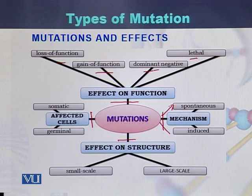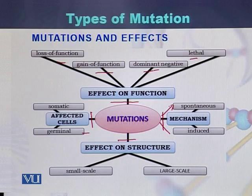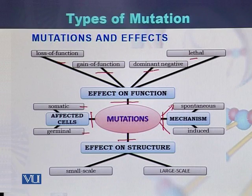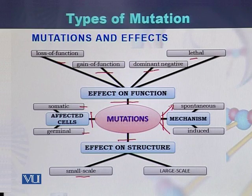Based on the affected cells, the mutation can have an effect on germinal cells or on somatic cells. The fourth category by which we can classify mutations is based on structure, where mutations can be small scale or large scale.